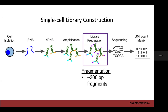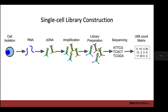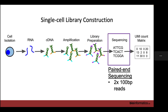Then we do library preparation. For Illumina sequencing, we fragment to roughly 300 base pair fragments. We then do paired-end sequencing generating two 100 base pair reads, although some facilities now have specially designed protocols for 10x data and will sequence the exact length needed for each read.